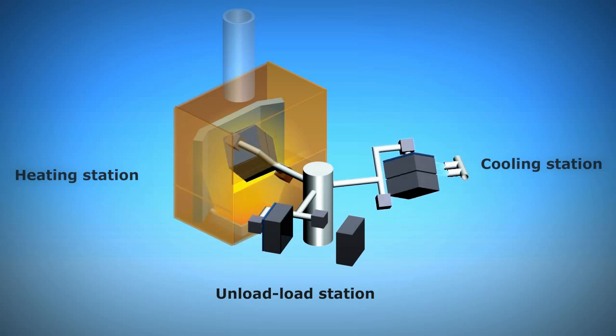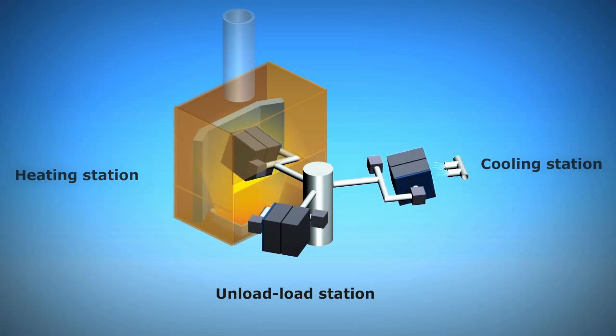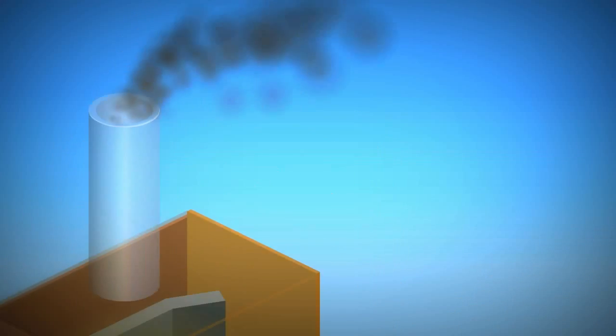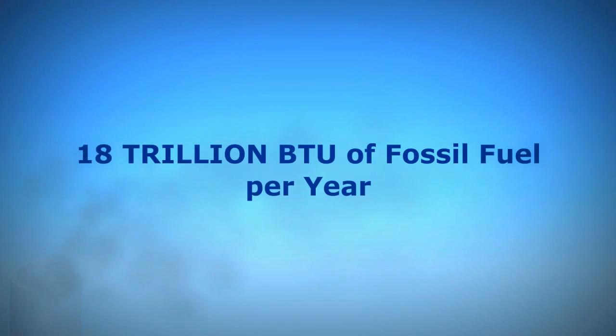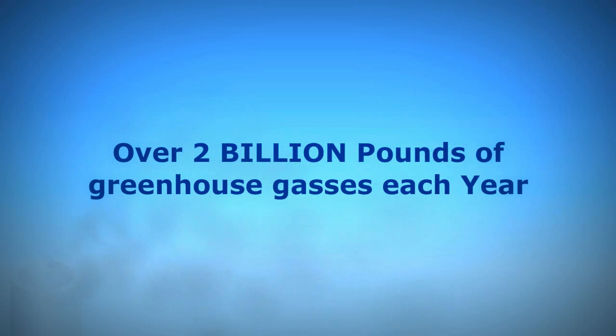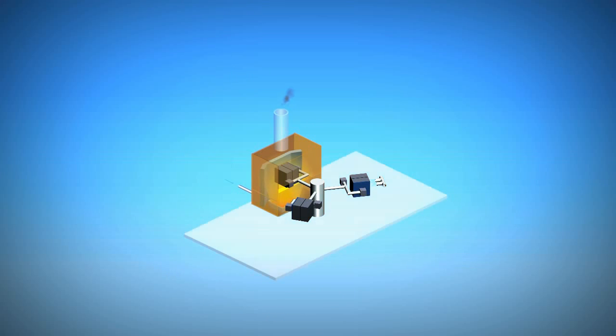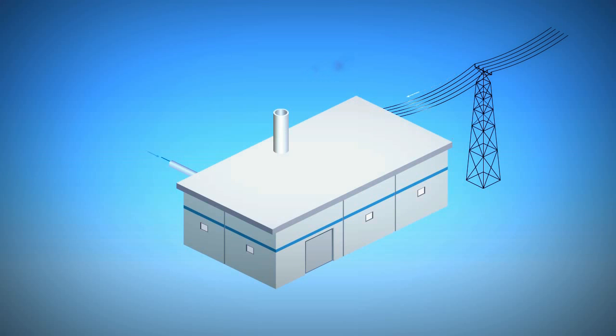But rotational molding has problems. It uses natural gas or sometimes kerosene for heat. Rotational molding burns over 18 trillion BTUs of fossil fuel and generates over 2 billion pounds of greenhouse gases each year. Most of the heat is wasted out of the oven chimney. And rotational molding equipment is big, heavy and expensive, requiring a substantial factory building with industrial gas and electric hookup.